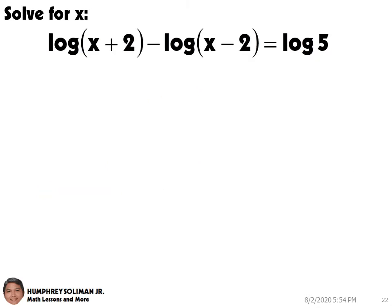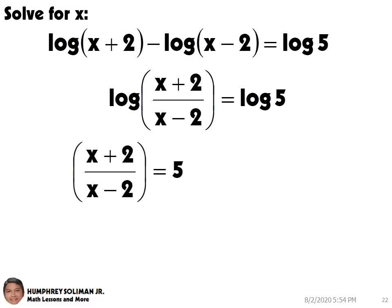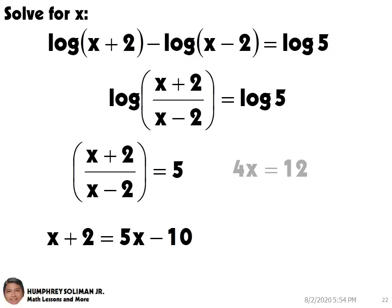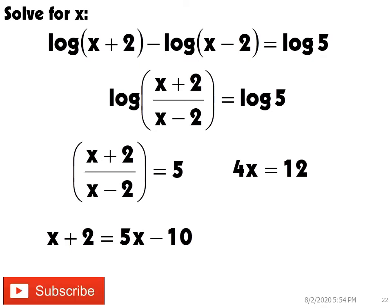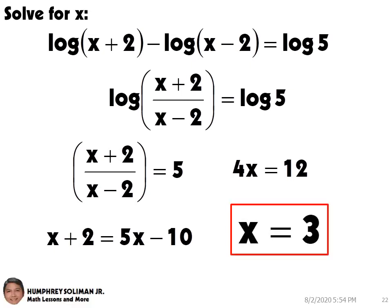Let's try another example. First, we need to combine the left side as a single logarithm. And then, we can rewrite this without the logarithms. Multiplying both sides by x minus 2, we can get x plus 2 equals 5x minus 10. Simplifying, this will give us 4x equals 12. Divide both sides by 4, we can get x equals 3.